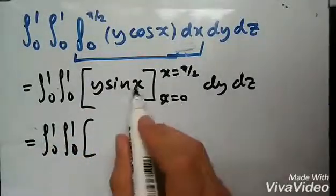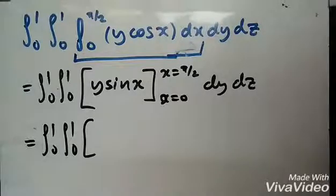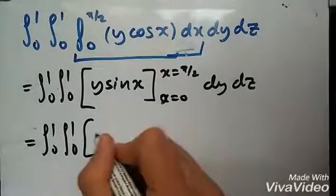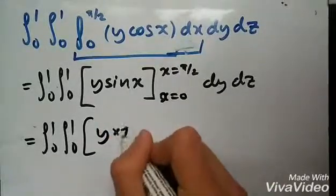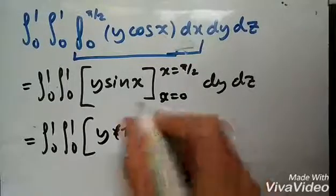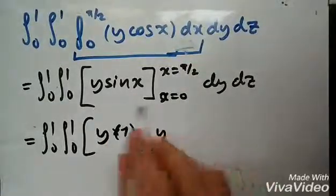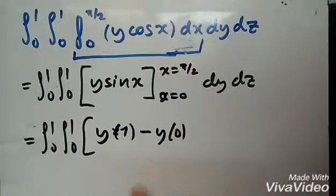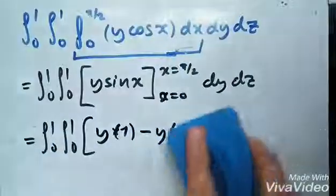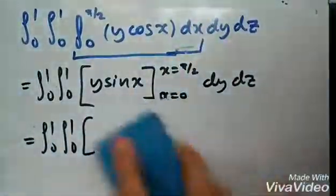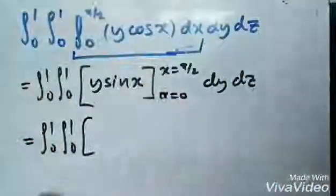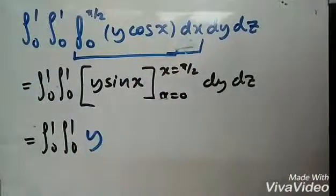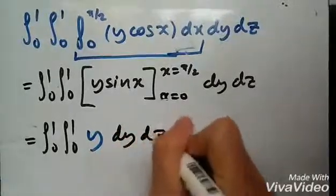Replacing x with pi over two: sine of pi over two is one, so we get y times one. Replacing x with zero: sine of zero is zero. So we're left with just y. This turned out quite nicely — it's just y dy dz.